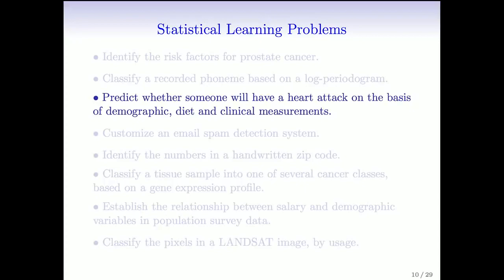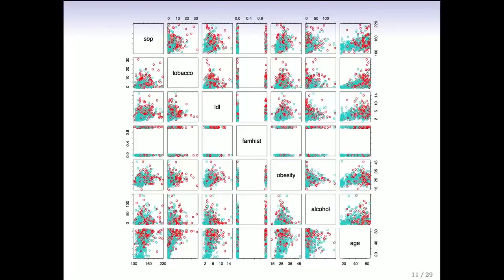The next example: predict whether someone will have a heart attack on the basis of demographic, diet, and clinical measurements. These are data on men from South Africa. The red ones are those that had heart disease, and the blue points are those that didn't. It's a case-control sample — all the heart attack cases were taken as cases, and a sample of controls were made. When you have a binary response like this, you can color the scatterplot matrix so you can see the points, which is rather handy.